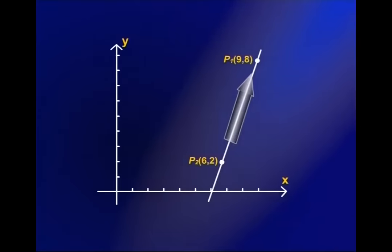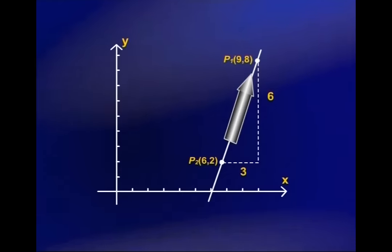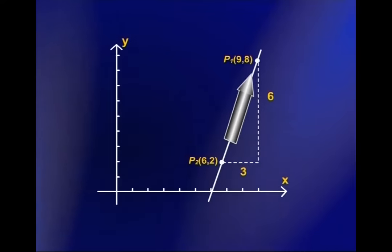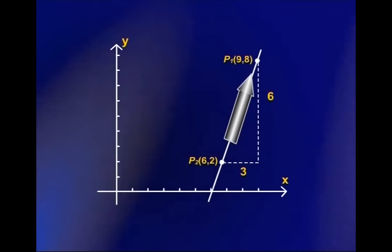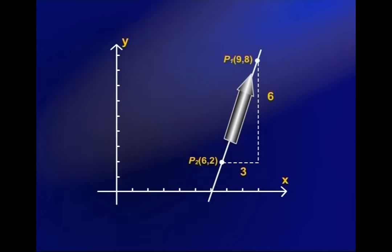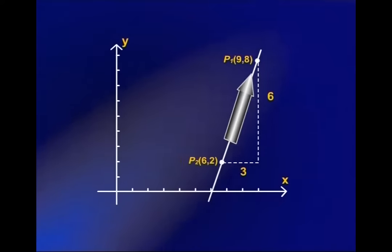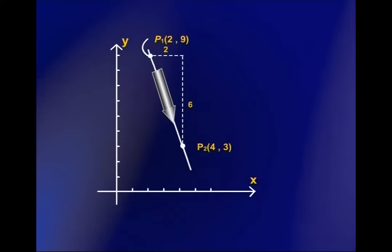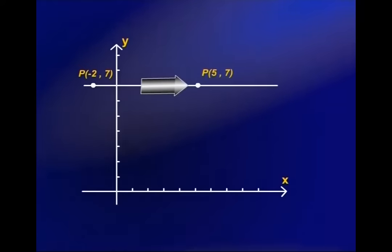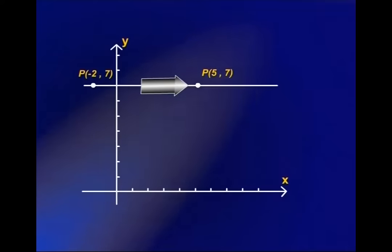I recommend you do as many problems as possible from the assigned homework. Let's do another example: plot the three lines from the previous example on the xy coordinate plane. You get three figures — Part (a), Part (b), and Part (c) — and you can see what the lines actually look like.